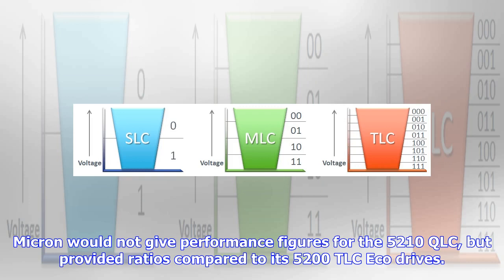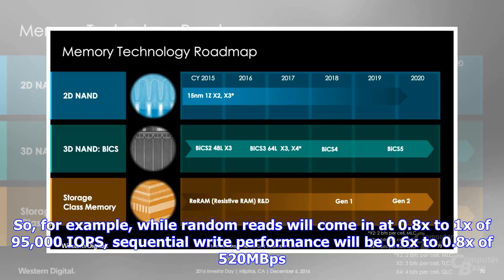Micron would not give performance figures for the 5210 QLC but provided ratios compared to its 5200 TLC Eco drives. For example, random reads will come in at 0.8x to 1x of 95,000 IOPS, while sequential write performance will be 0.6x to 0.8x of 520 MB/s.